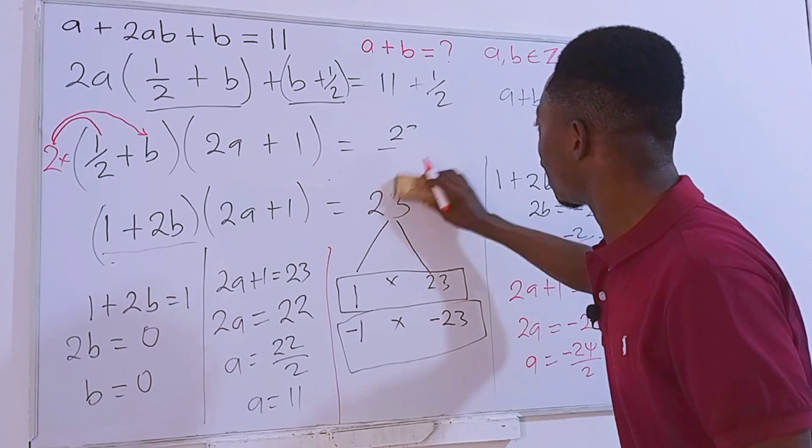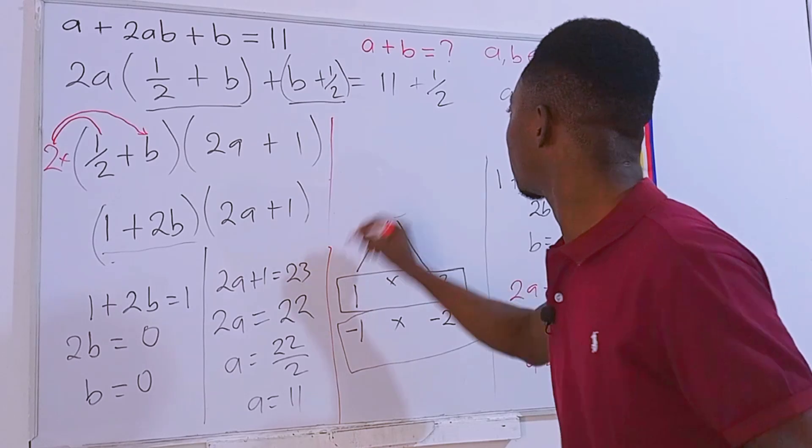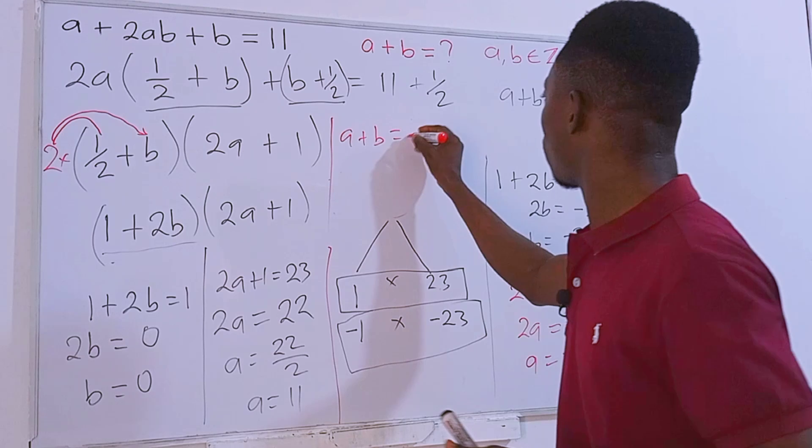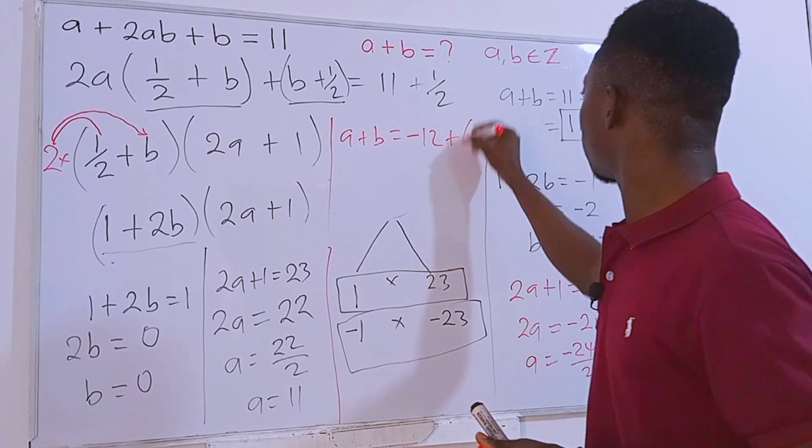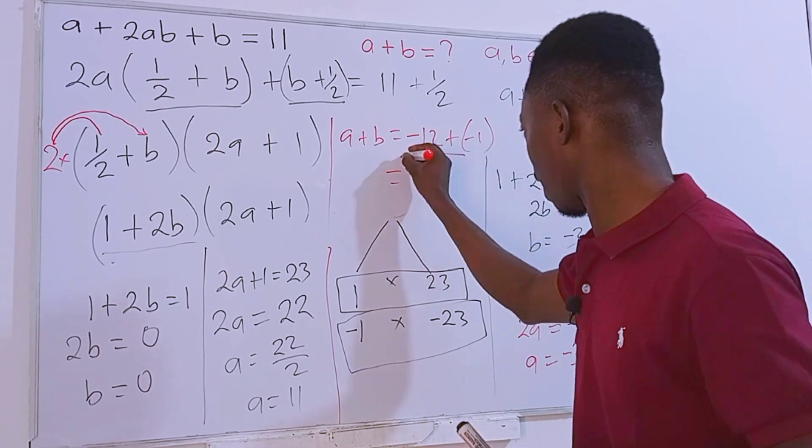And of course, we are looking for a + b. Now we know that a = -12 and b is also -1, which will give us -13 as the other solution. Of course, we have two solutions for this: -13 and 11.